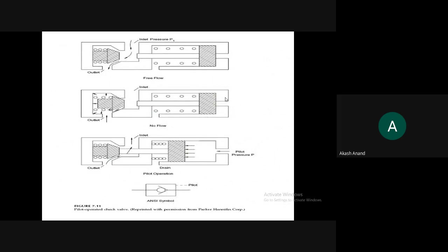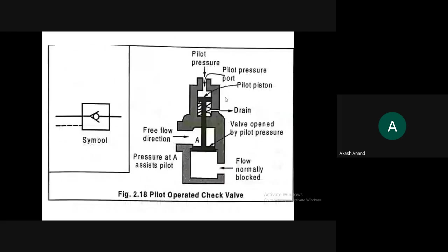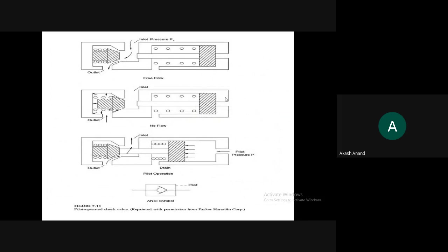In a pilot-operated check valve, there are three positions: when inlet pressure opens the valve, flow passes through the outlet; when pilot pressure is applied, it blocks the fluid passage; and in the case of return pressure, the piston is automatically blocked.